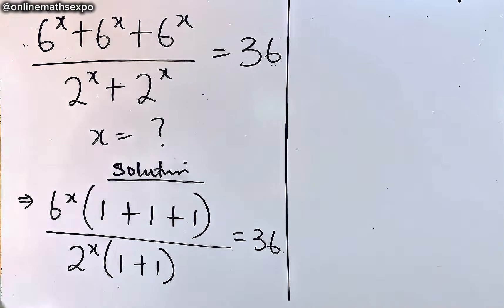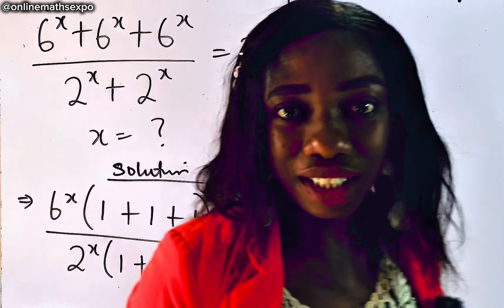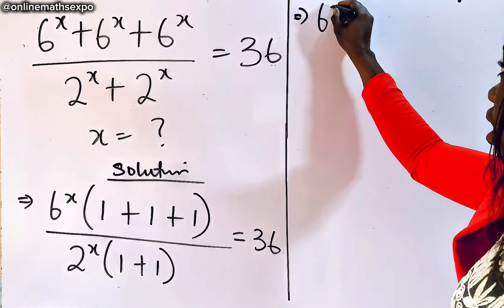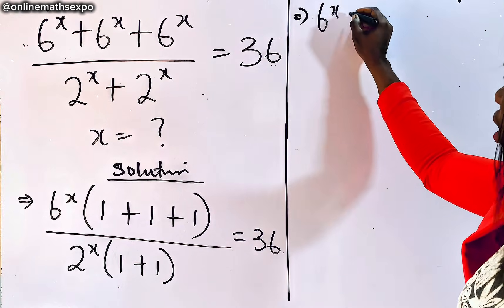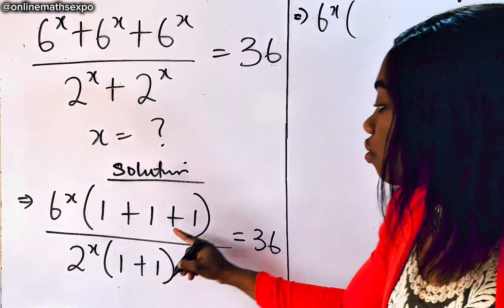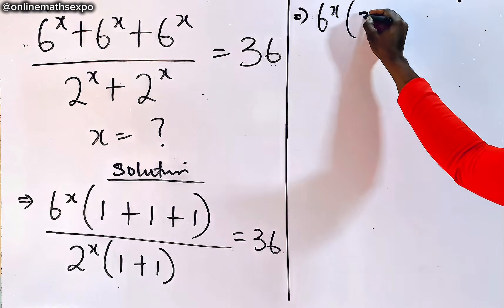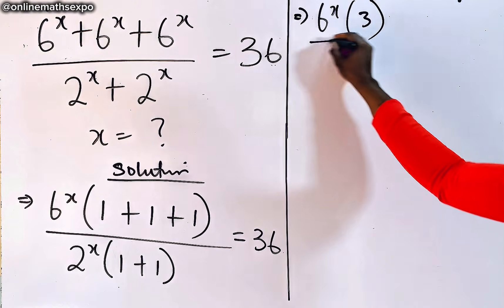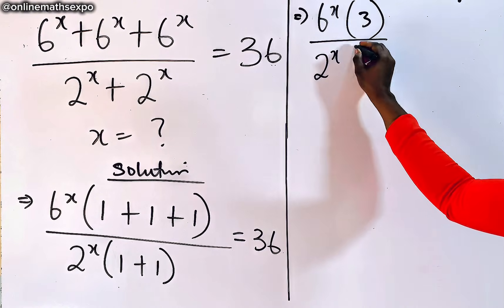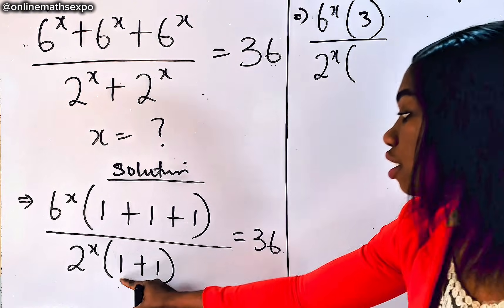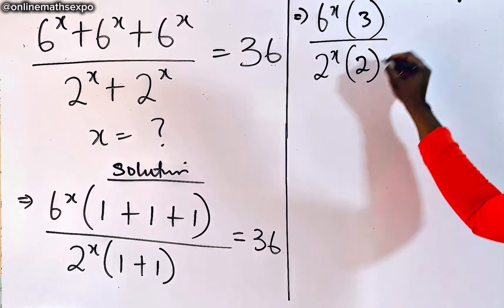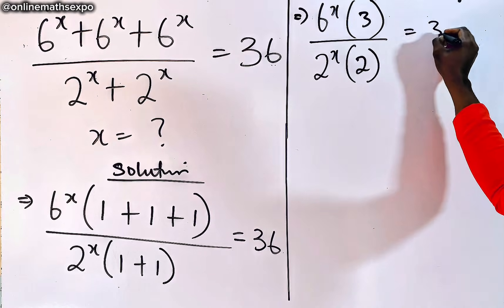So this is going to give us 6 to the x-power multiplied by — collecting the numerator terms gives you 3. And it's divided by 2 to the x-power, where collecting the denominator terms gives you 2. And it's equal to 36.